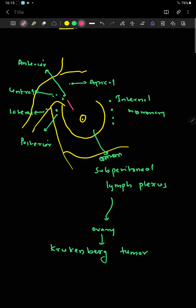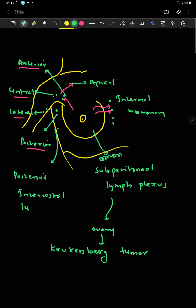75% of lymph drainage goes into the anterior axillary lymph nodes. The anterior, central, lateral, and posterior groups all drain together into the apical group of axillary lymph nodes. Lymph from the medial part drains into the internal mammary lymph nodes. There is also a posterior intercostal lymph node group.